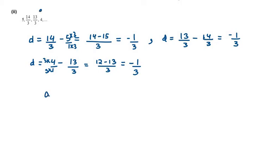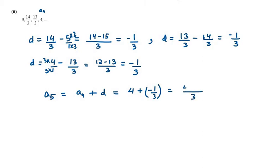We need to find the other three terms. We are given A4 again, so we need to find A5. A5 will be A4 plus D — add the difference into the consecutive terms. A4 is 4 and D is minus 1/3. Taking LCM: 4 into 3 is 12, and 12 minus 1 is 11, so A5 is 11/3.